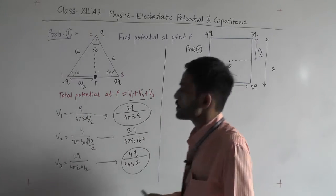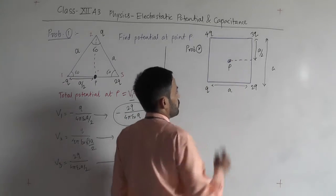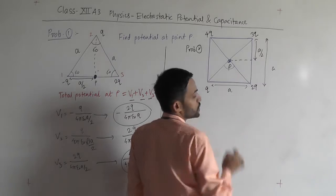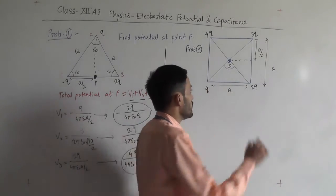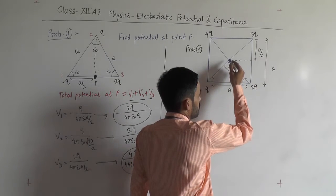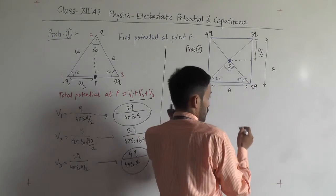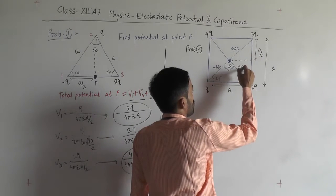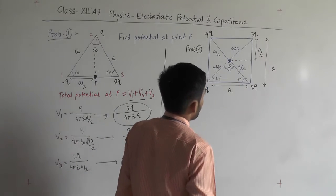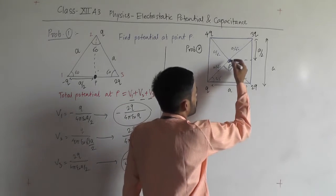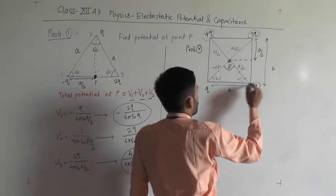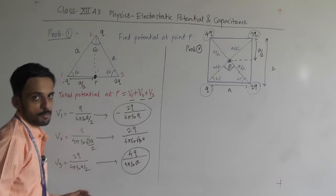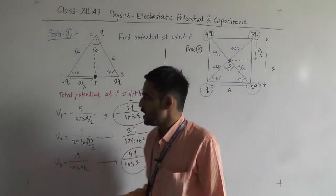For Problem Number 2, consider a unit positive charge placed at point P at the center of the square. Since it is a square of side a, the diagonal is a root 2, so the distance from center to each corner is a by root 2. The total angle is 360 degrees, with each corner at 90 degrees. Calculate potential due to 4q, 3q, 2q, and q, then sum all contributions to get total potential at P.